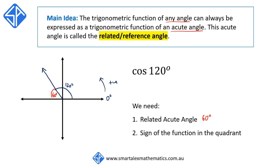Next, we need to determine the sign of cos within quadrant 2. We can use the acronym "all stations to central" to help us. Remember that within the second quadrant, only sine is positive, which means that cos is going to be negative in the second quadrant. Having these two pieces of information, we can now write cos 120 degrees as minus cos 60 degrees.